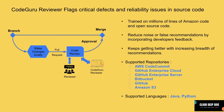Now that we understand how CodeGuru Reviewer can help you review your code, let's see how the whole model works. In development, you cut a branch, make your changes locally, commit your code, and then create a pull request. The moment you create a pull request and send it to a reviewer, CodeGuru Reviewer is triggered automatically. It starts reviewing your code and provides recommendations. Based on those recommendations, you can make changes and create another pull request. It supports repositories like AWS CodeCommit, GitHub Enterprise Cloud, GitHub Enterprise Server, Bitbucket, GitHub, and Amazon S3. It currently supports only Java and Python languages.